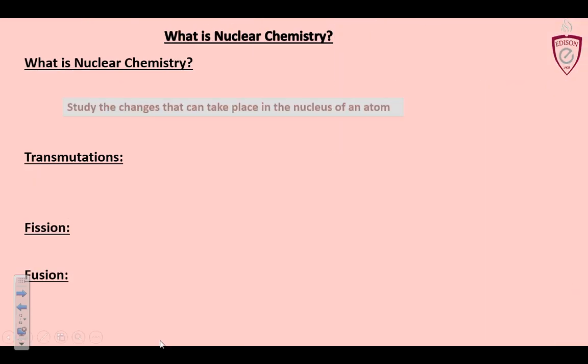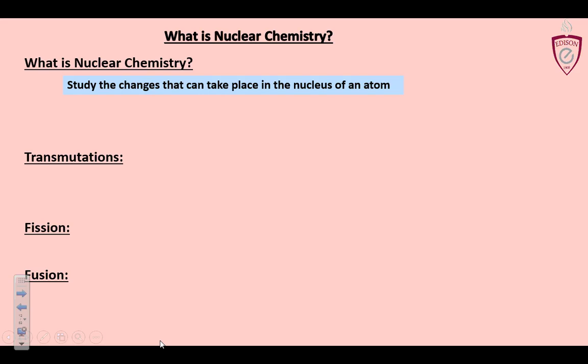So what exactly is nuclear chemistry? It is the study of the changes that happen specifically in the nucleus, so protons and neutrons. We're gonna study radioactive emissions - alpha, beta, gamma, positron emissions, and transmutations of nuclei, one element turning into another. And now we're gonna revisit half-life and radioactive decay and go a little bit deeper into it maybe than we did in earth science.